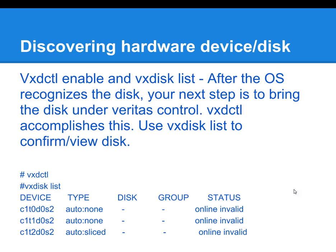To confirm that Veritas can now see the disk, or to actually bring the disk under Veritas control, VxDCTL enable is the command that you would have to use. VxDCTL does not provide any output. However, to see the results of running that command, you can run a second command called VxDiskList. VxDiskList is a very basic Veritas command, and it's considered one of the bread-and-butter commands that you would use to get information from Veritas.